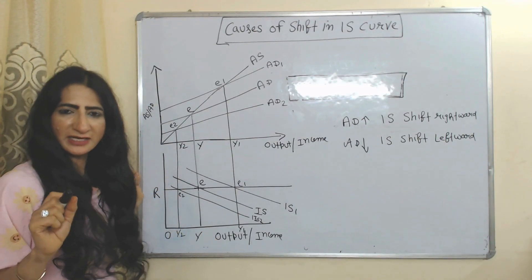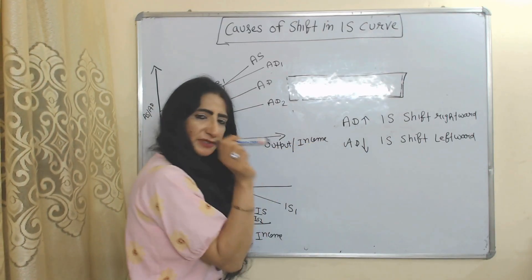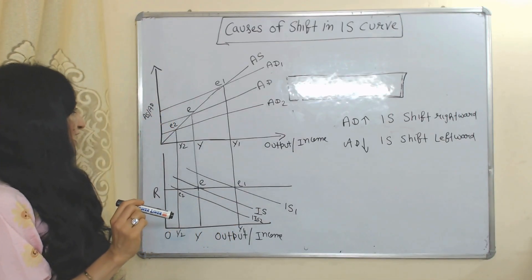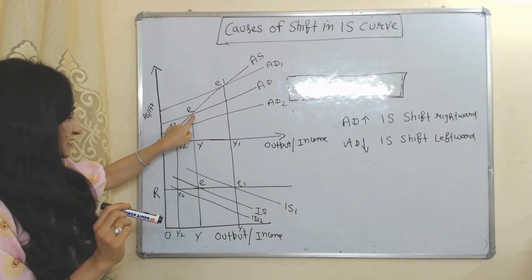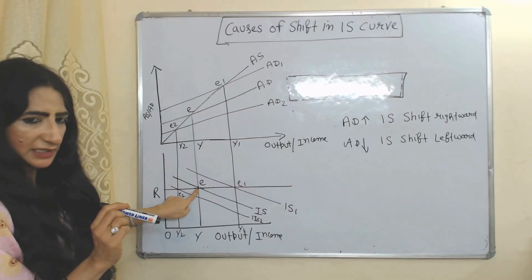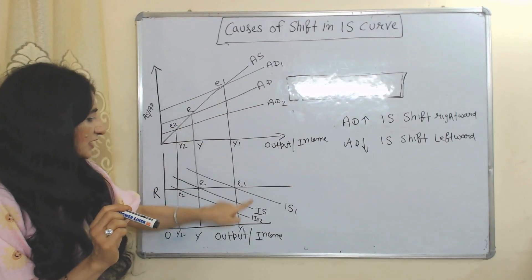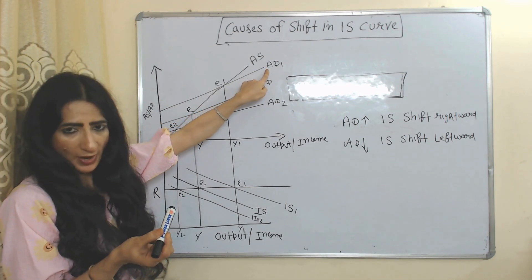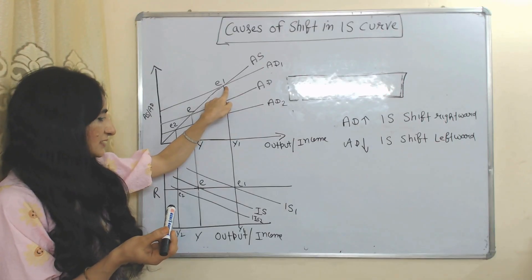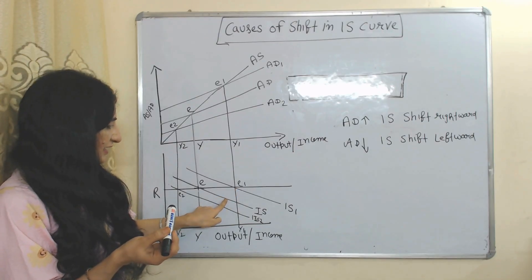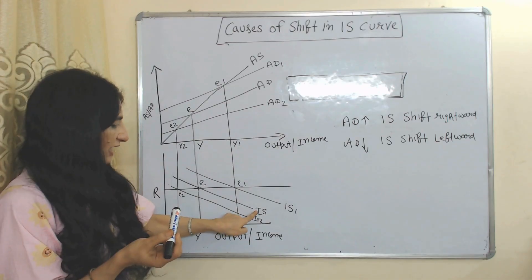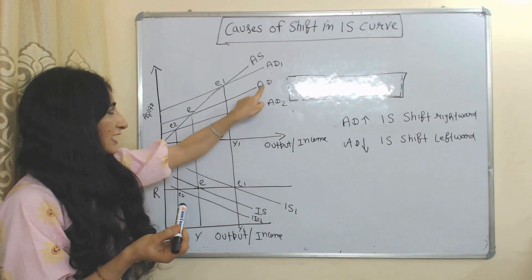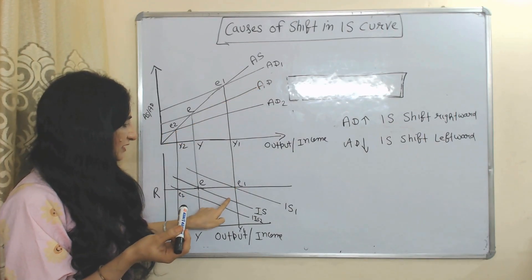Now we will see the diagram of the shift in the IS curve. The initial equilibrium point is E, with initial aggregate demand AD and initial IS curve. Now suppose aggregate demand increases from AD to AD1. The new equilibrium point is E1. As aggregate demand increases, the IS curve shifts rightward from IS to IS1. This is our new IS curve.